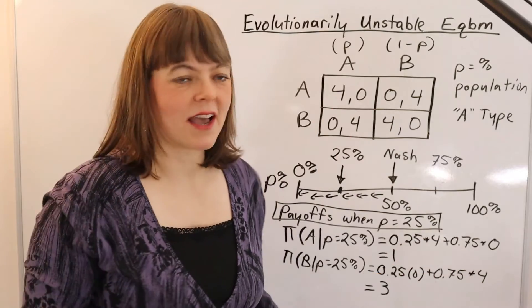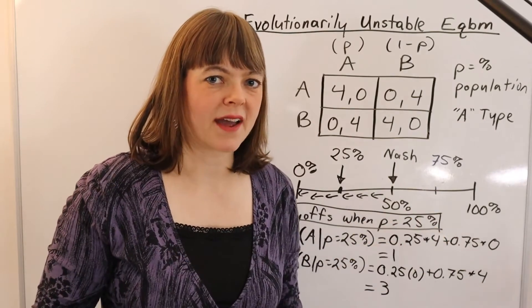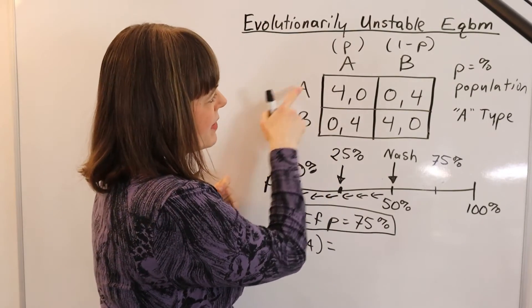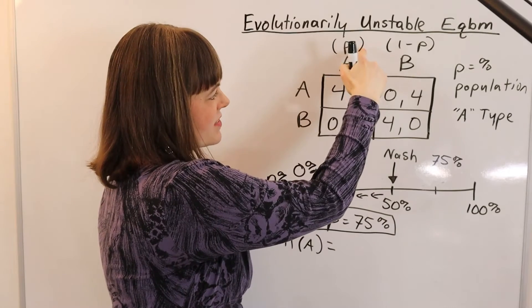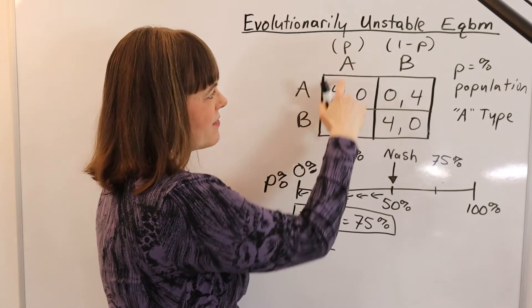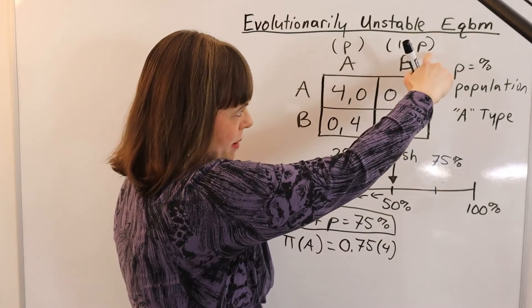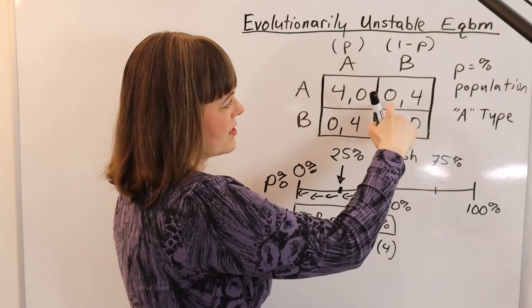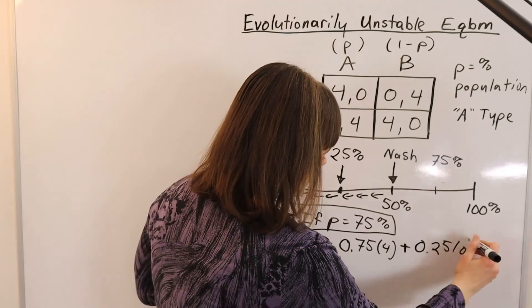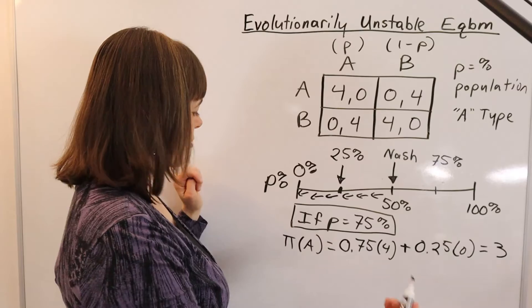Now we have to do the same exercise for what happens if we're at 75%. In this case, the payoff to player A is going to be the percentage of the population that's A, that's 75%, times the payoff to the A players if they encounter another A, that's 4, plus the percentage of the population that's B, that's 25%, times the payoff to the A players if they encounter a B, and that payoff is 3.